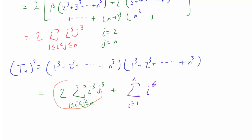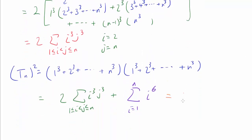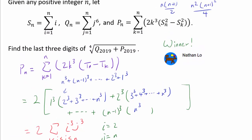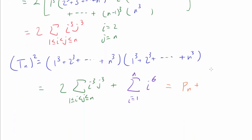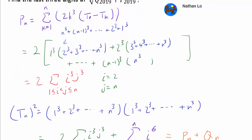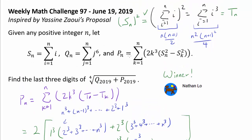But wait — we know both of these expressions. The first one, that double sum of i³j³ for i < j, is P_n divided by 2 (since we factored out 2 earlier), so that piece is P_n. And the second one, the sum of i to the 6th, we defined as Q_n. So T_n squared equals P_n plus Q_n. We are 99% of the way there. I'd like to take this time to recognize Yasin Zhao, whose proposal heavily inspired this challenge problem, and Nathan Lo, who was the very first person to correctly answer it.